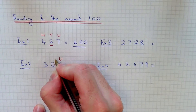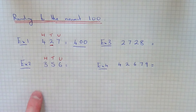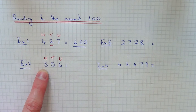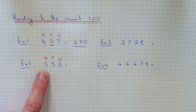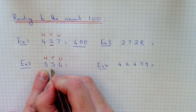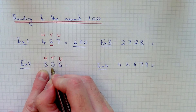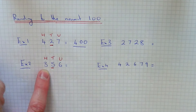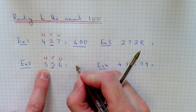If you label up your columns, the one we're interested in is the hundreds column. At the moment we have 300. So there are two possible answers here: if you round it down, it'll stay as 300; if you round it up, the answer will be 400. So to decide which one it's closest to, look at the number in the tens column, which is a 5. Since this number is 5 or above, you're going to round the number up, so it's going to be closer to 400.